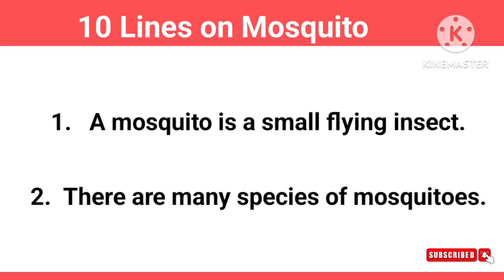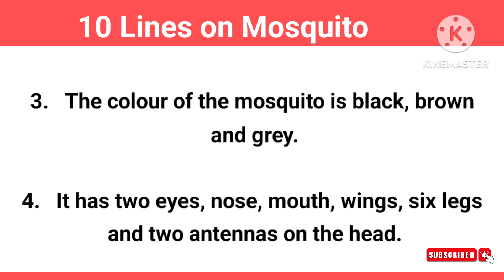A mosquito is a small flying insect. There are many species of mosquitoes. The color of the mosquito is black, brown and grey.